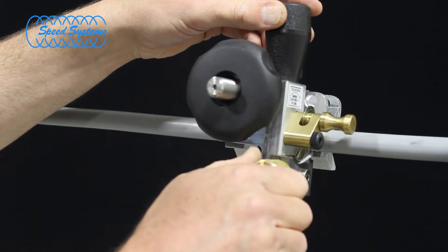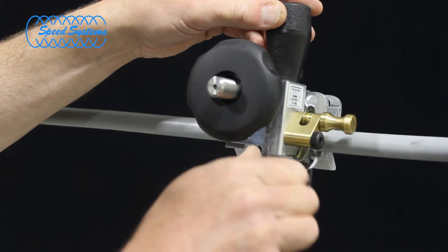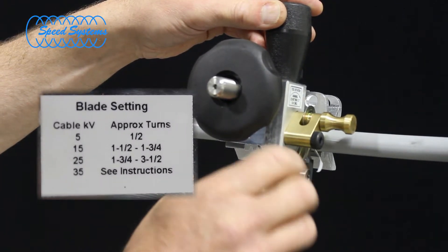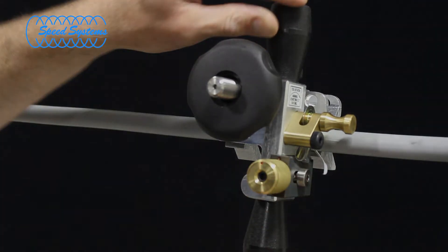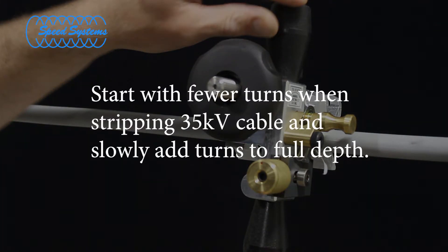Set the blade depth using the blade adjuster knob. The chart on the nameplate provides an approximate setting based on the kV rating of the cable. For 35kV cable, start with fewer turns for the first revolution and gradually increase the depth of cut to lessen the risk of twisting the conductor.